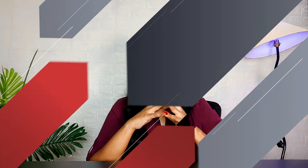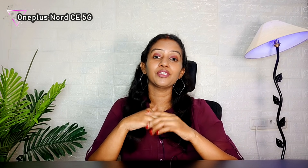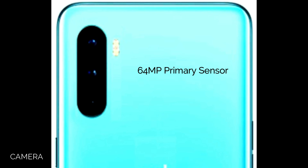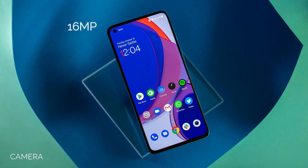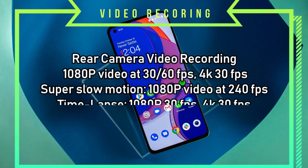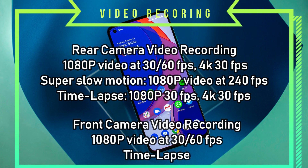Looking at the camera, the Nord CE has a small upgrade over its predecessor. On the rear, the primary sensor is 64MP, making it a triple camera setup: 64MP primary, 8MP ultra-wide secondary sensor, and a 5MP depth sensor. The front camera is a 16MP punch hole notch. Video recording supports 4K at 30fps, 1080p at 30 and 60fps, and slow motion at 1080p 240fps.